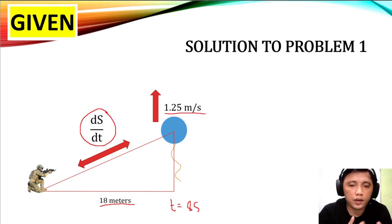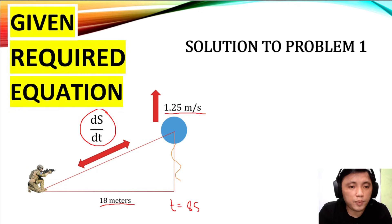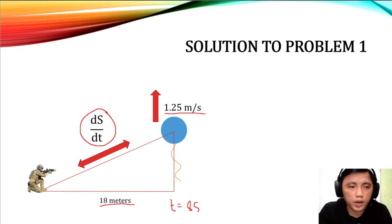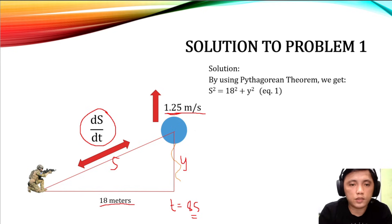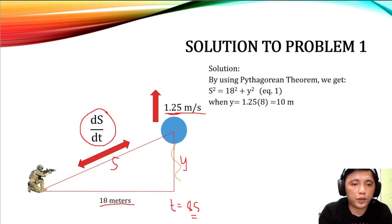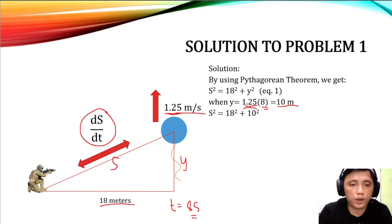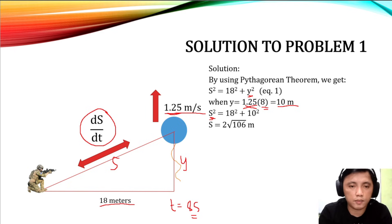The next step is formulating an equation. The figure formed is a triangle, so the most common equation is the Pythagorean theorem. We let s be the hypotenuse and y be the vertical distance covered by the balloon. The value of y equals the rate times time: 1.25 times 8 seconds equals 10 meters. Using the Pythagorean theorem: s squared equals 18 squared plus y squared. Substituting y equals 10, we get s equals the square root of 106 meters.